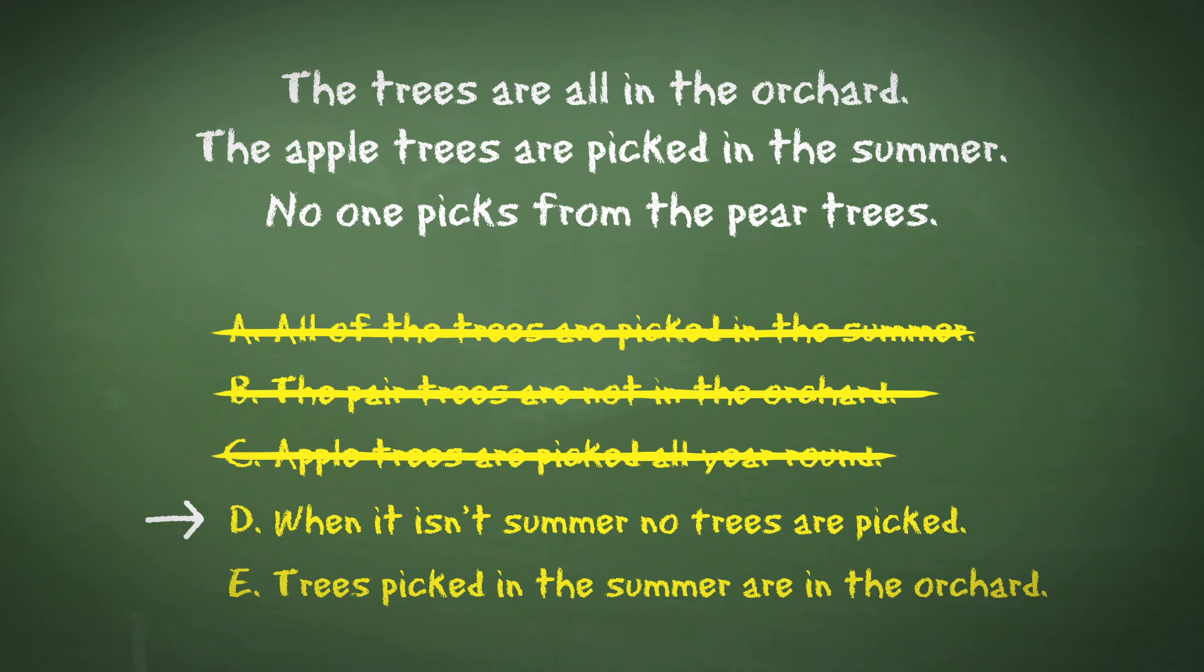Answer D is, when it isn't summer, no trees are picked. On first glance, this answer could be true. We know that the apple trees are picked in the summer, and no one picks the pear trees. However, always remember that we are looking for a statement that must be true, not one that could be. There is no statement that says apple trees and pear trees are the only trees in the orchard. There could be others that are picked when it isn't summer.